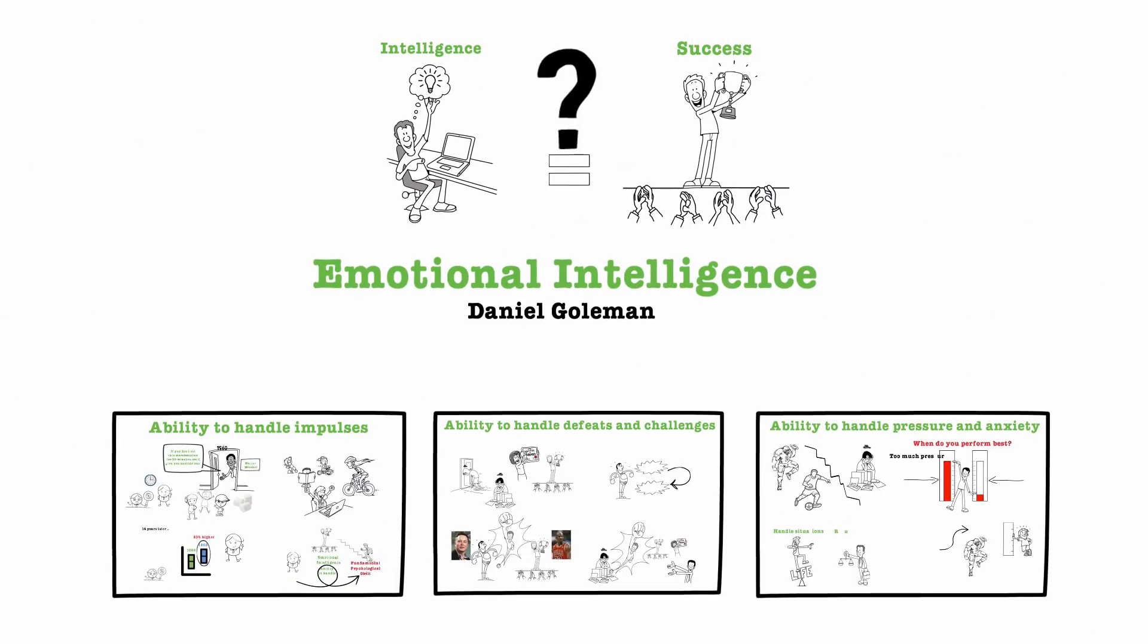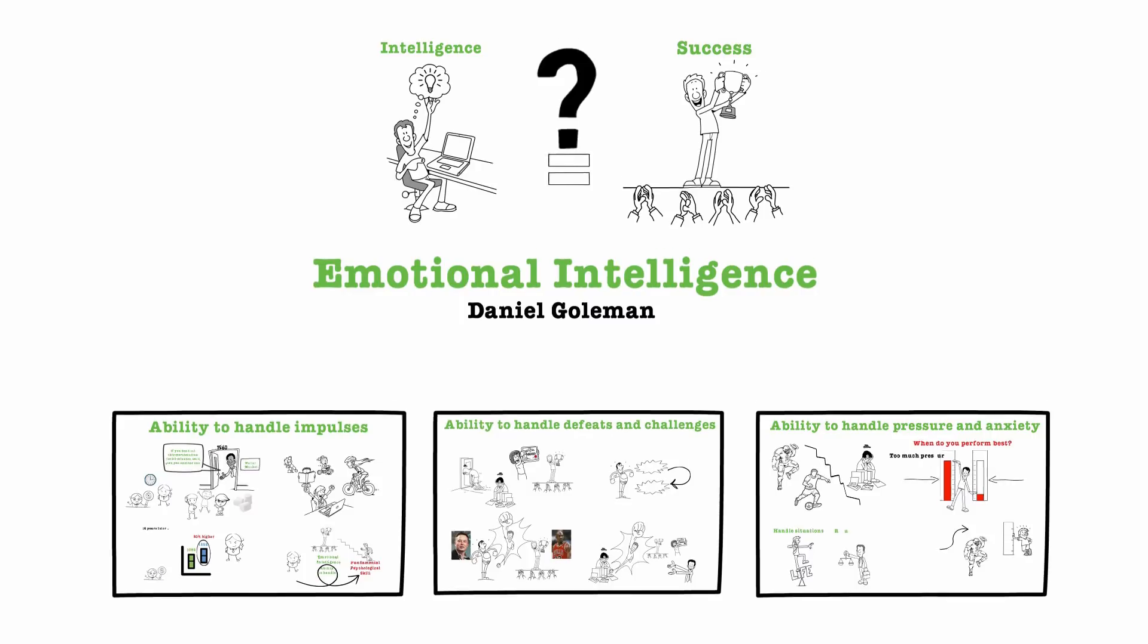So far, we've talked about three keys to emotional intelligence: your ability to handle impulses, your ability to handle defeats and challenges, and your ability to handle pressure and anxiety and nerves. What do they all have in common? They all have in common the idea of the ability to handle your emotions.